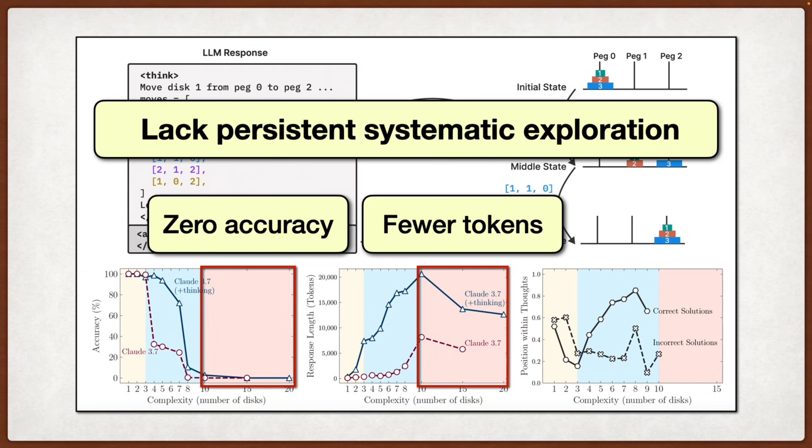Overall, while the reasoning model hype train keeps rolling with each new release claiming better benchmark scores, this paper provides much-needed systematic analysis, showing that we're still far from models that can truly reason in a generalizable way and that the thinking in these models might be more of an illusion than a revolution. The work raises important questions about whether current approaches based on reinforcement learning and extended chain of thought are sufficient for achieving genuine reasoning capabilities, or if we need fundamentally different architectures and training methods.